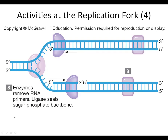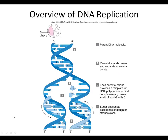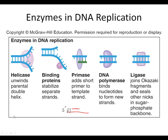Here we see the replication bubbles — the leading strand is formed continuously, and the lagging strand is formed discontinuously with Okazaki fragments. Enzyme removes RNA primers, DNA polymerase fills in the missing nucleotides, and ligase seals the sugar-phosphate backbone. The new strands are formed and the chromosome has been replicated. For the test: enzymes involved in DNA replication are helicase, primase, DNA polymerase, and ligase. DNA replication always proceeds in the 5-to-3-prime direction.